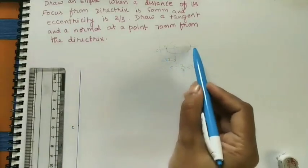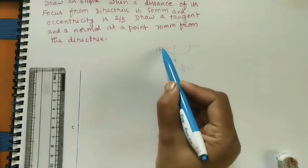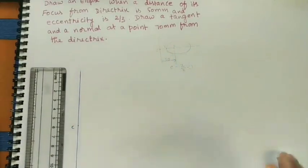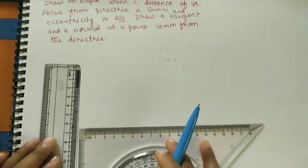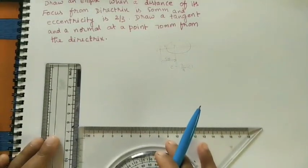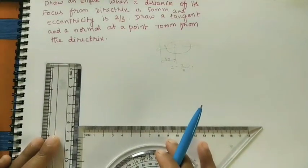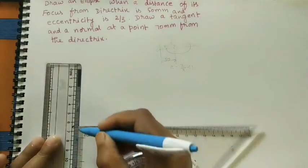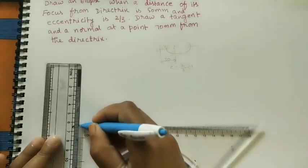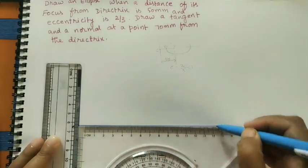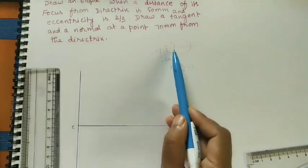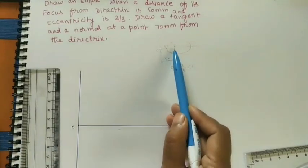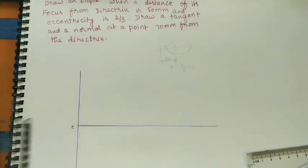At C, draw the axis line. This axis line is 90 degrees to the directrix. For doing the 90-degree line, I am using a set square. Take any length for the axis line. On it, mark the CF length — mark F point, it is 5 cm from the C point.